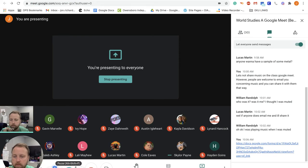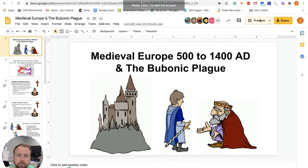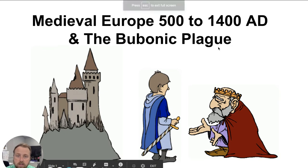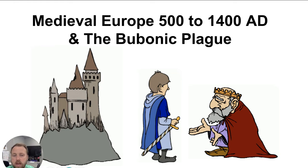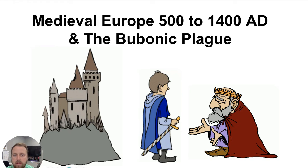The medieval period, also known as the Dark Ages, ran from roughly 500 to 1400 AD — some say 400 to 1300, it's flexible — but it was almost a thousand years during which there were very few advancements in Europe: very few changes in technology, government, religion, or other cultural and societal ideas. One of the things that helped end the medieval period was the bubonic plague.